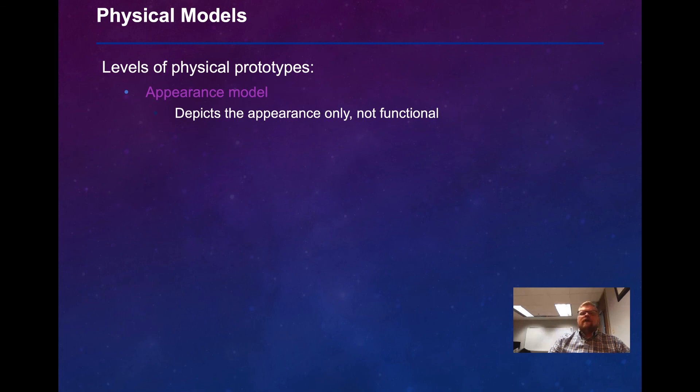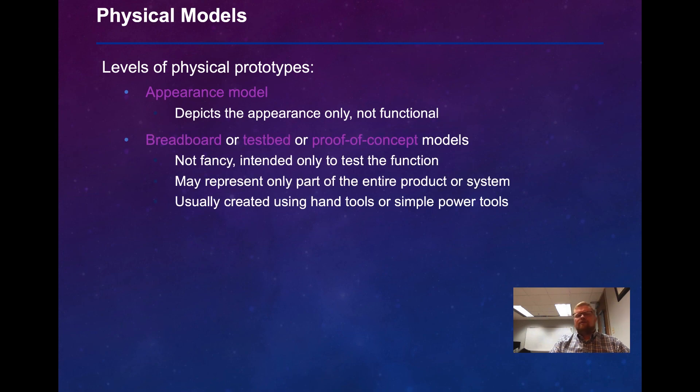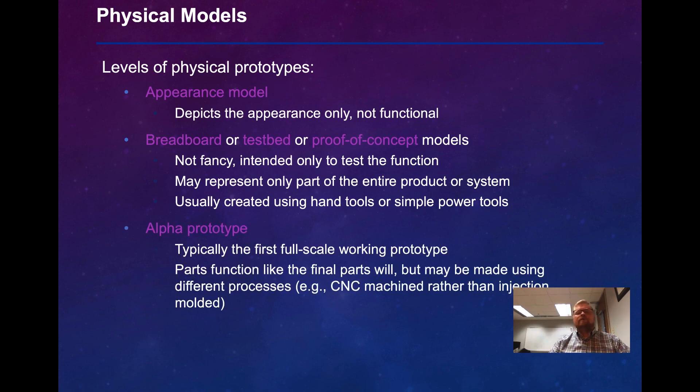We have different levels of physical prototypes. We have an appearance model, which depicts the appearance only and is not functional. We have a breadboard or testbed or proof-of-concept model. These are not fancy. They're intended only to be used to test the function of a system. They may represent only part of the entire product or system, and they're usually created using hand tools or simple power tools.